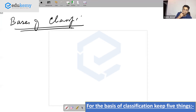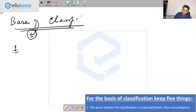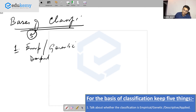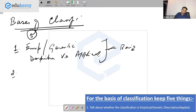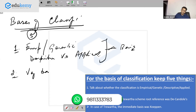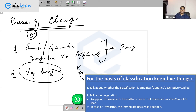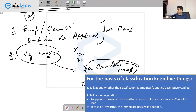Let's go one by one. For the basis of classification, there are five things to cover. Number one: discuss whether the classification is empirical, genetic, descriptive, or applied — this forms the basis. Second, talk about the vegetation basis. All schemes in our syllabus — Kopen, Thornwhite, Trewartha — have a vegetation basis, and the root reference was D. Kendall's map.